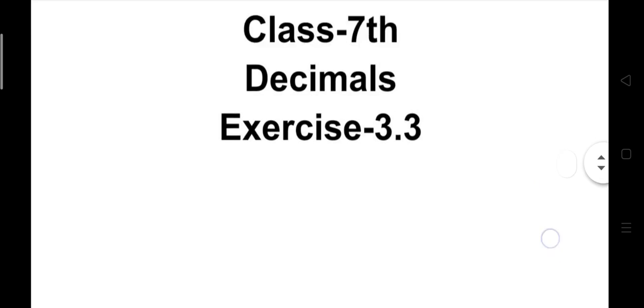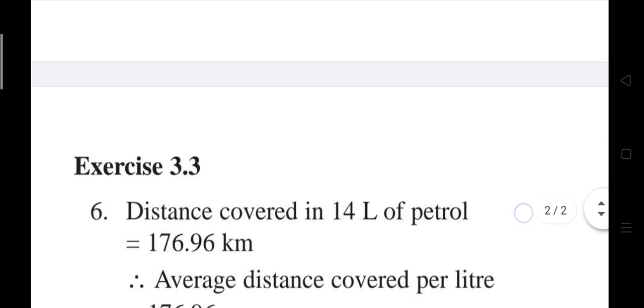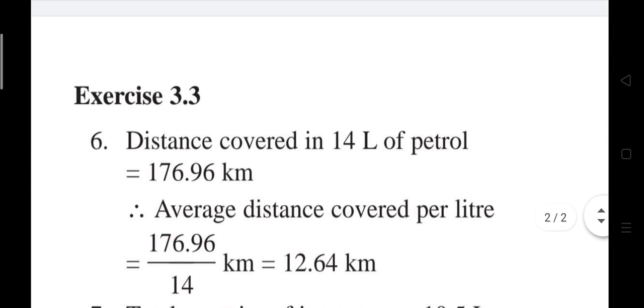Question 6 from Viva publication is on your screen. The question states: A vehicle covers a distance of 176.96 km in 14 liters of petrol. We need to find the average distance covered per liter of petrol.